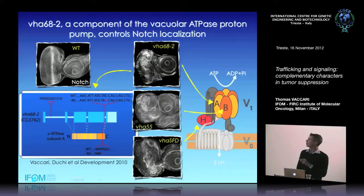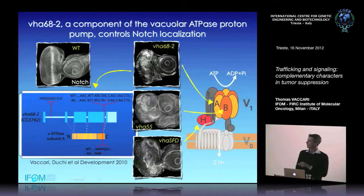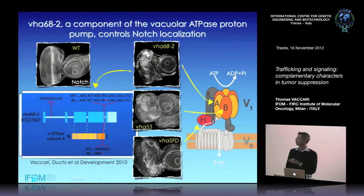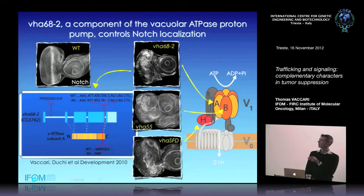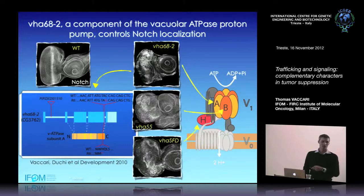The vacuolar ATPase is a proton pump: it has an ATPase domain that uses ATP energy to pump protons across a transmembrane pore, identified as the V0 sector. The pump is present in endomembranes and on the plasma membrane, and is not always assembled — it can be separated into the cytoplasmic sector and the membrane sector, and assembled together where and when needed.